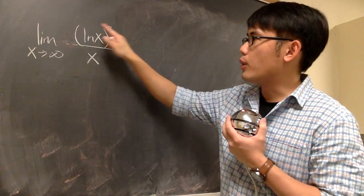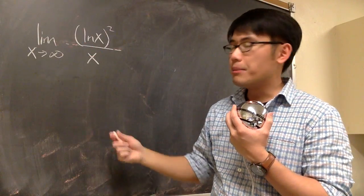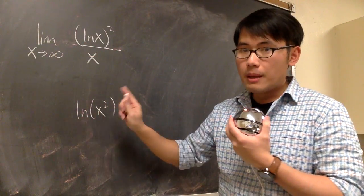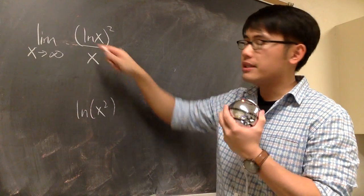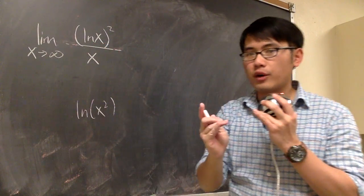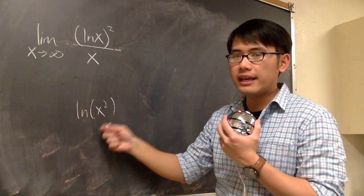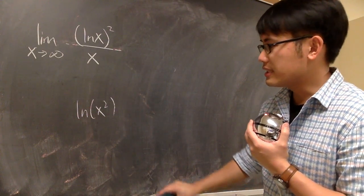First thing, you cannot bring the power to the front by the ln property. Because this is okay, you can bring the 2 to the front. But then in this notation, this means you have ln x times another ln x. It's not like this. This means you have ln of x times x inside. So that's the notation business.